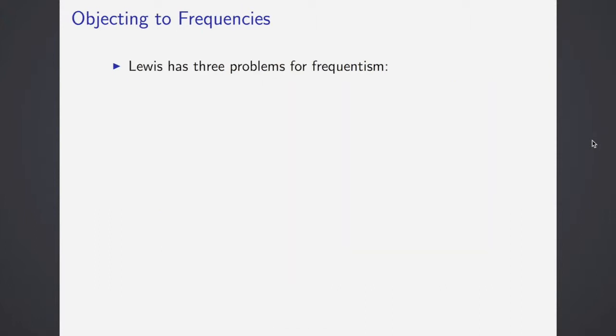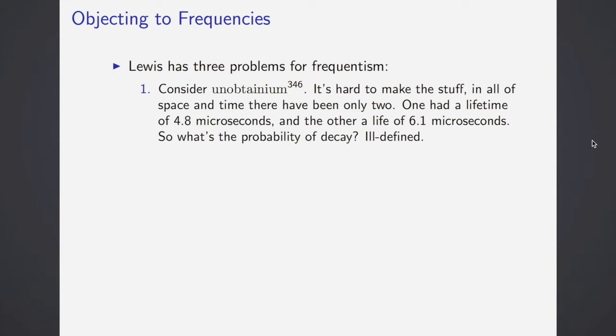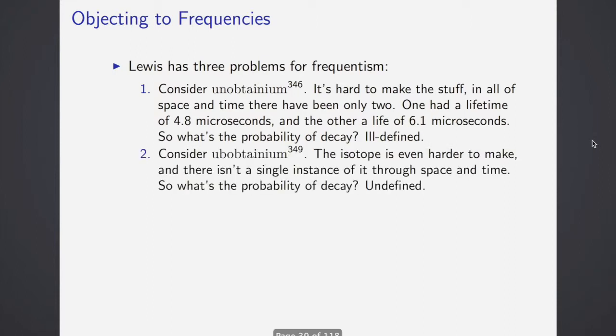What are some problems for holding the frequencies in the spatiotemporal arrangement of things as chance makers? He illustrates it with what he calls unobtainium. Very funny examples of unobtainium and different isotopes of unobtainium. Consider unobtainium 346. It's hard to make this stuff. In all of space and time, posit that there have only been two. One had a lifetime of 4.8 microseconds and the other had a life of 6.1. What's the probability of decay? Well, it seems ill-defined because it could change going forward. Maybe it's in between the two, but it just seems unlikely. You're going to want to do a lot of these tests and try to work out what the probability of decay is.